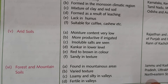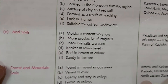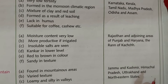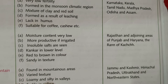Arid or desert soil has very low moisture content but becomes more productive if irrigation facilities are available. Insoluble salts are seen accumulating at the lower level, making agriculture difficult. It is red to brown in color with a sandy texture, found in Rajasthan and adjoining areas of Punjab and Haryana.